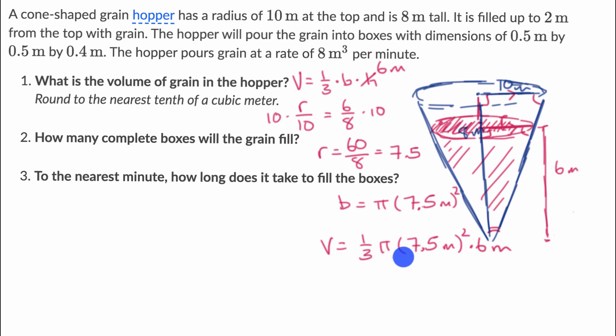And let's see, we could simplify this a little bit. Six divided by three, or six times one third, is just going to be equal to two. And so let me get my calculator. They say round to the nearest tenth of a cubic meter.